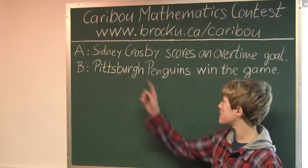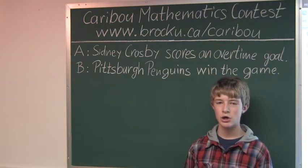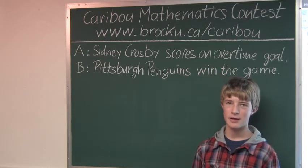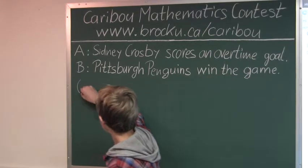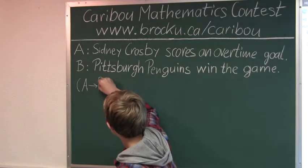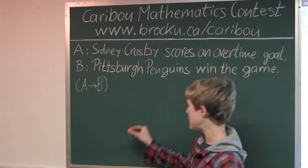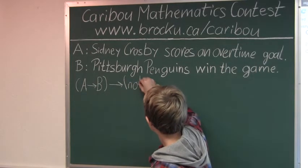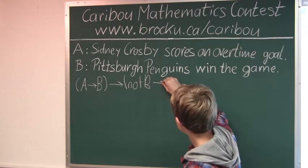So, in logic, when we have statements like these, they could be abbreviated with letters like A and B. If you know about hockey, you could solve this problem pretty easily. But you don't have to know about hockey because you can use a simple formula. That formula is: if we know that from statement A follows B, then the only other thing we know is that from not B follows not A.